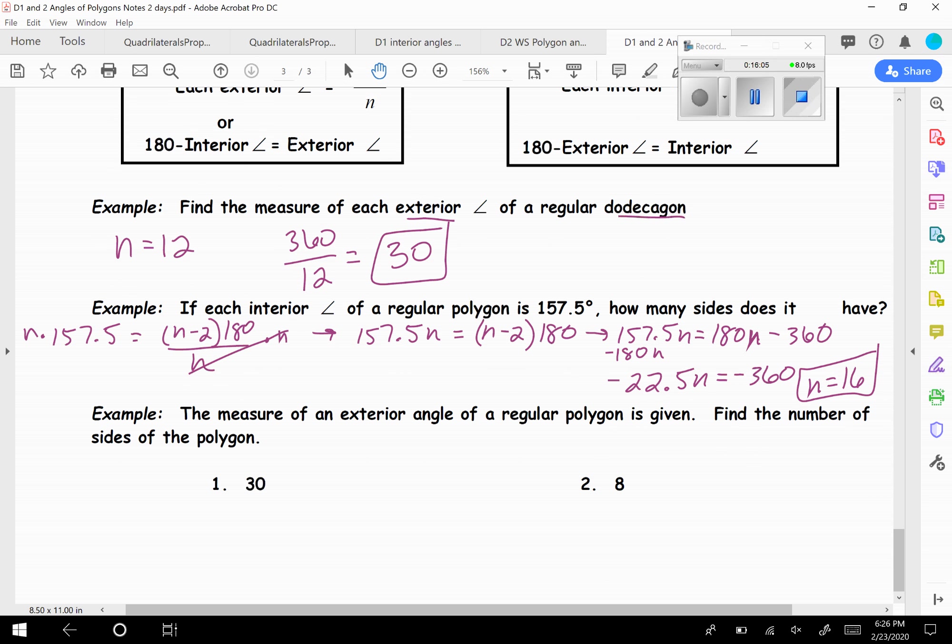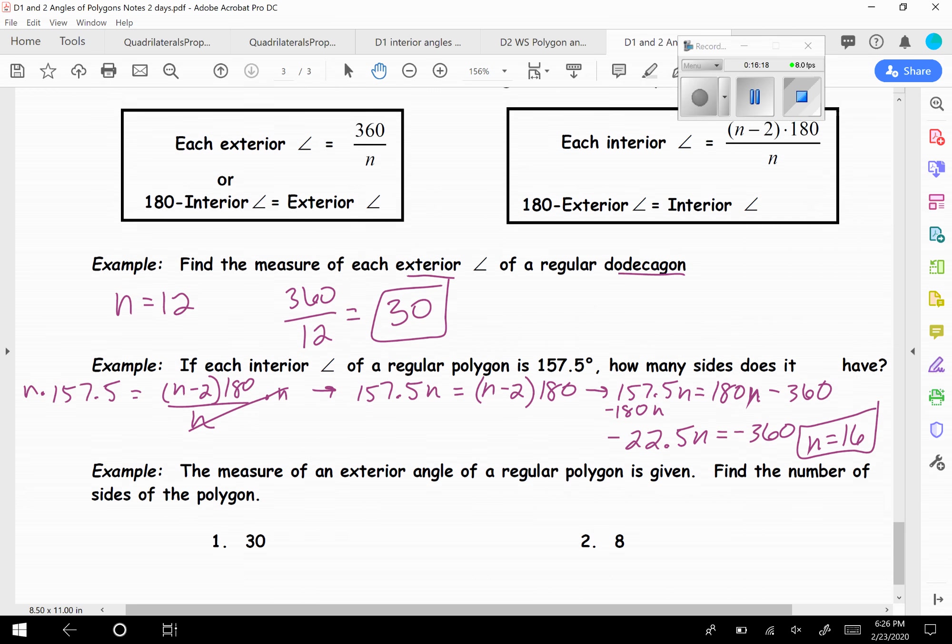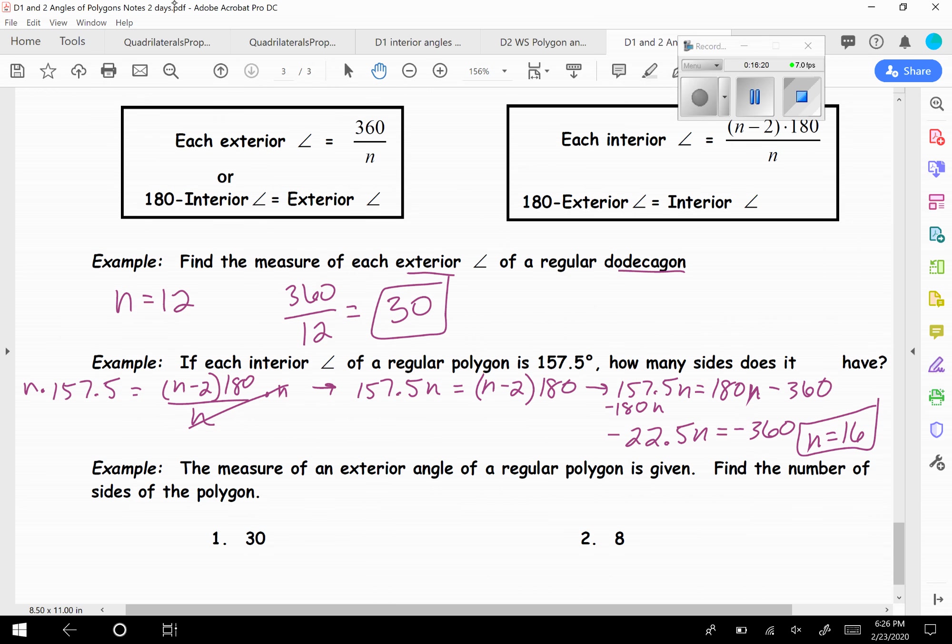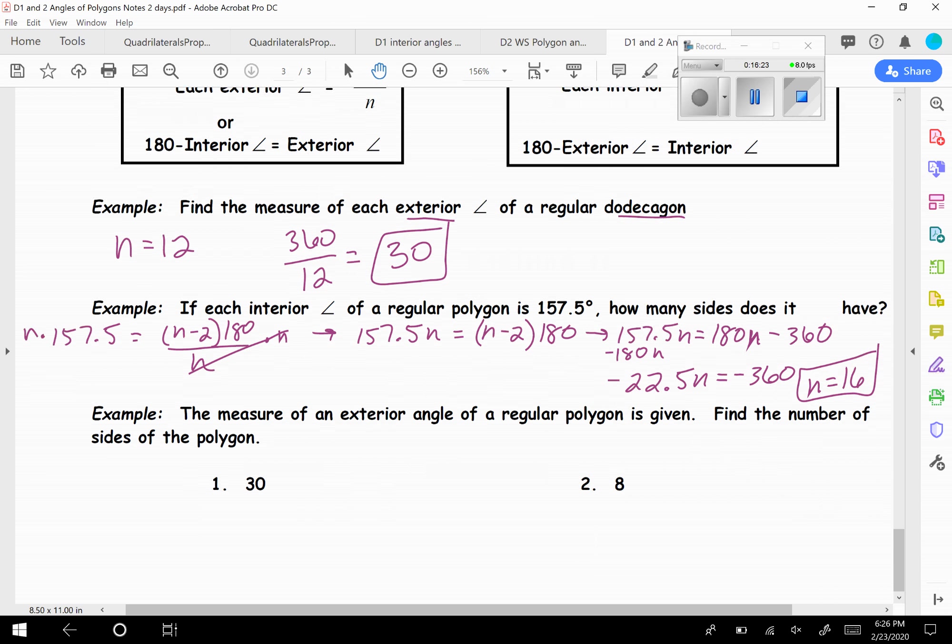So y'all need to get familiar with solving formulas for different variables. Next one. The measure of an exterior angle of a regular polygon is given. So this is the exterior. Find the number of sides of the polygon. So let's look up here. Each exterior angle is equal to 360 divided by N. So 30 is equal to 360 divided by N. We need to solve for N. So I'm going to multiply by N on both sides. So I have 30 N is equal to 360. Well, divide by 30, divide by 30.